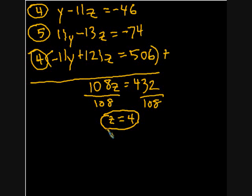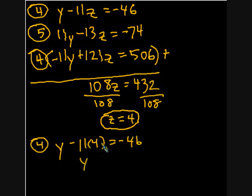Now, the next thing I need to do is I can plug this z back into either equation 4 or 5. And then I can solve for y. So I'm going to do that. It looks to me like it'll be easiest to solve equation 4. So I'm going to say equation 4. And I'll say y minus 11 times z, which is 4, equals negative 46. This is negative 44. So y, if I add 44 to both sides, I get y equals negative 2. And again, this is not my final answer. So I'll circle it and indicate this is an intermediate answer.